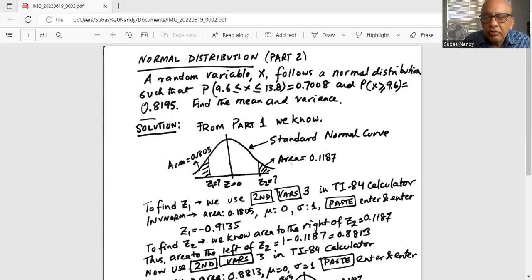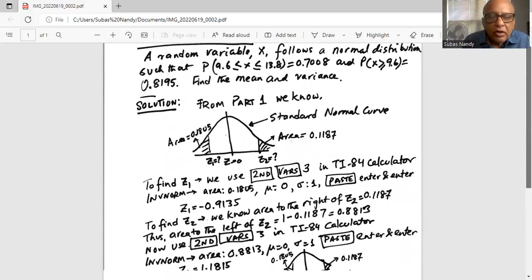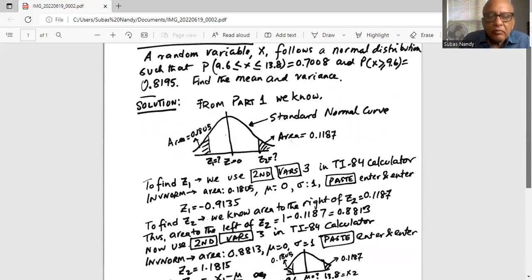We will do second verse 3. Area to the left of the unknown z1 is 0.1805, mu is 0, standard deviation is 1. We paste enter and enter. We get the value of z1 is minus 0.9135. This is the standard normal variable corresponding to the random variable x of 9.6.